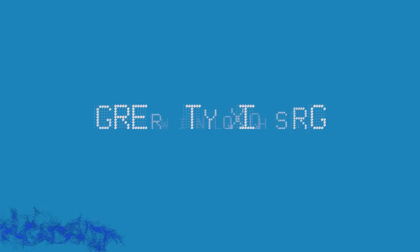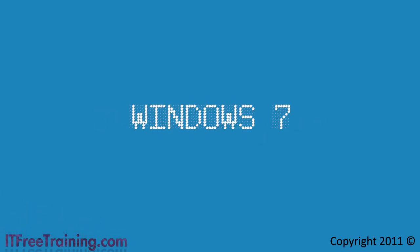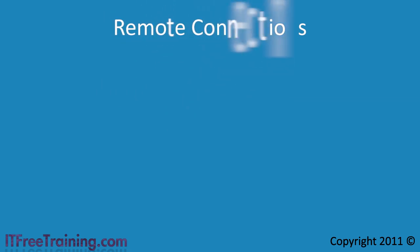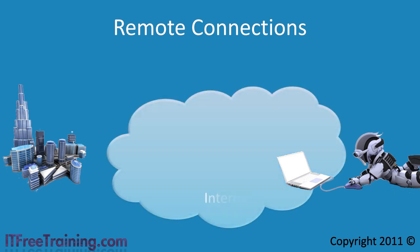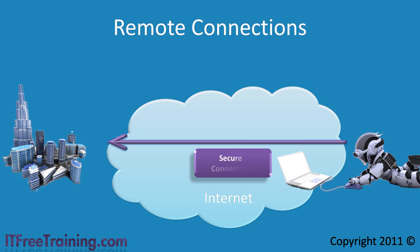Welcome back to your free training course for Windows 7. In this video I will look at creating a remote connection back to your office when you are at home or traveling. With Windows 7 you can use the internet to create a secure connection back to your office. On the other end you can have a Windows server, but a lot of companies prefer to have a hardware solution.